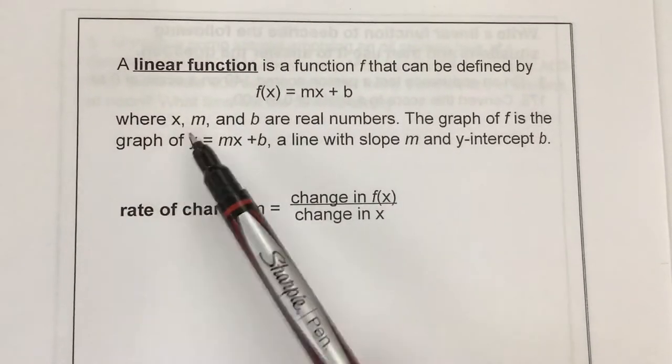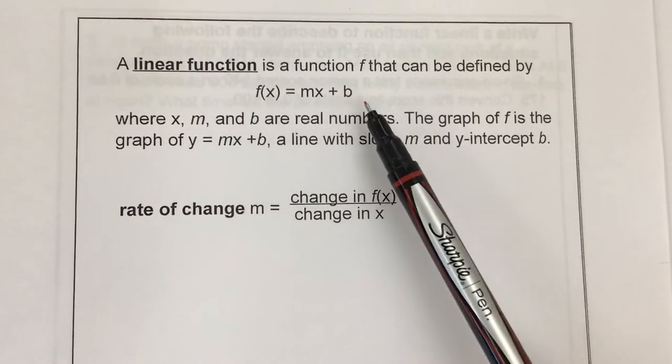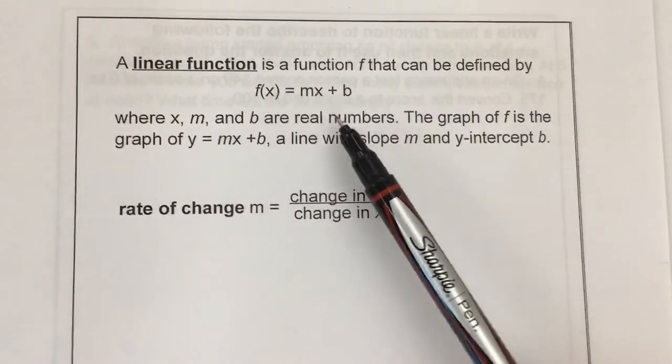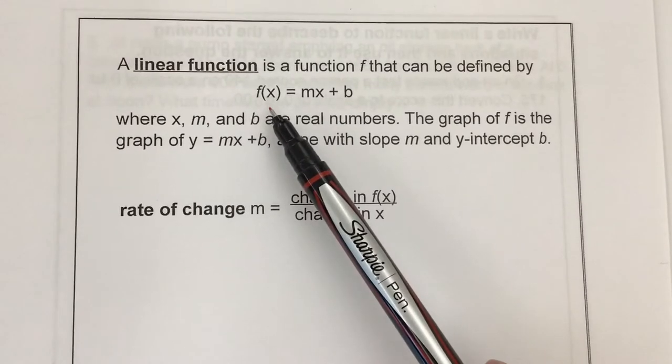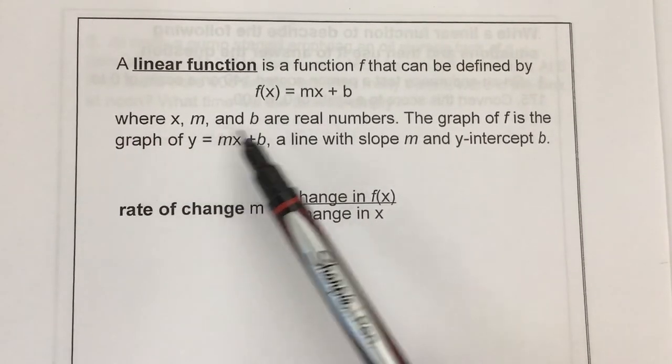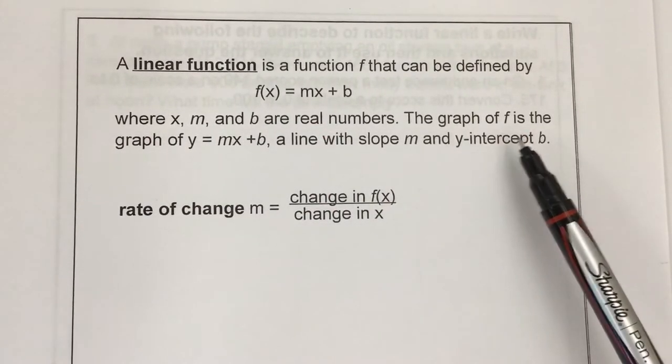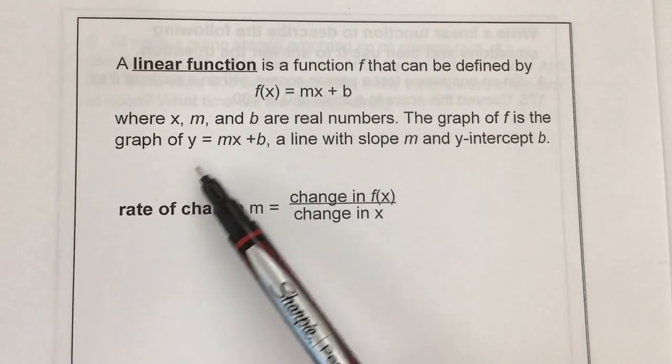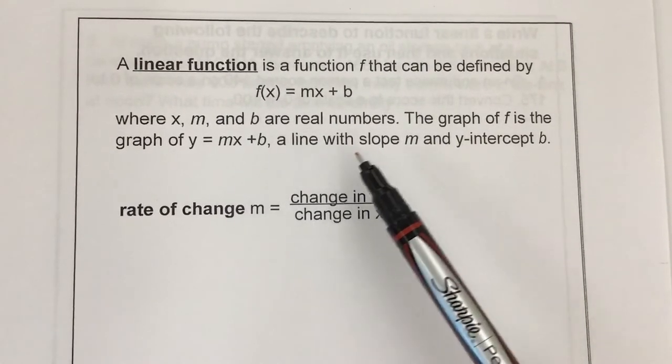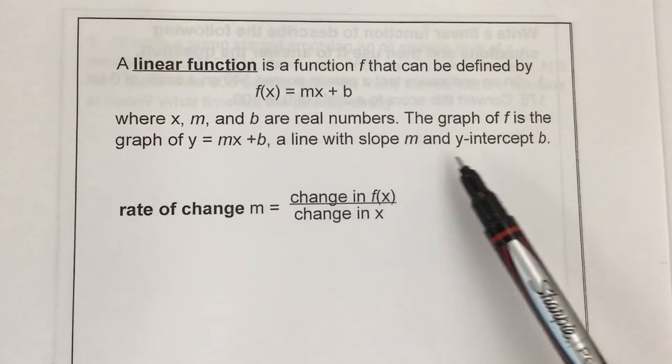From yesterday we defined a linear function as a function that can be defined by f(x) equals mx plus b. We replaced f(x) with y. Where x, m, and b are real numbers, the graph of f, which names a function, is the graph of y equals mx plus b. So it's a line with slope m and y-intercept b.